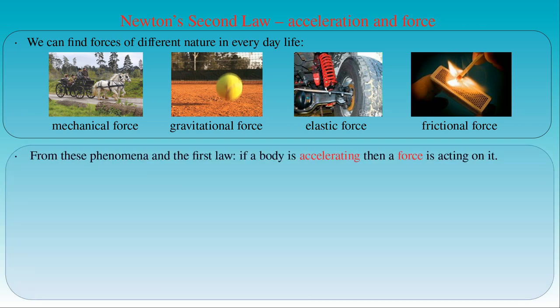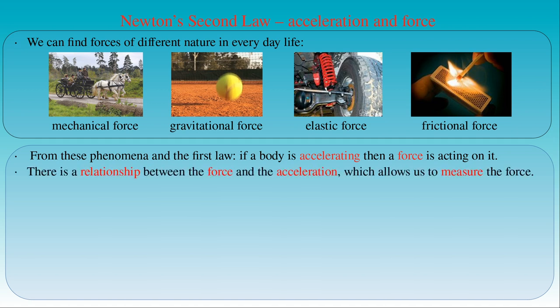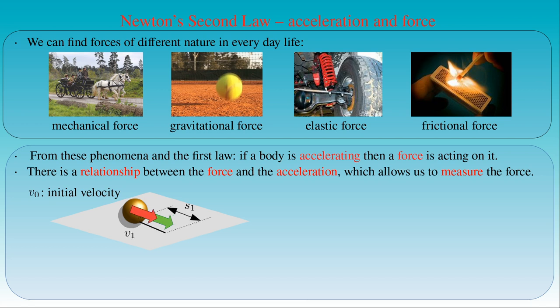Based on the first law, if a body is accelerating then a force is acting on it. Therefore, we must assume there is a relationship between the force acting on a body and its acceleration, which allows us to measure the force. Let us consider a ball made of wood, which is moving at velocity v0 or at rest on a flat surface. If the ball is at rest then v0 is 0. We can push the ball, giving it a greater velocity v1, and measure the distance s1 covered by the moving ball in the time interval t, which equals v1 times t. If the time interval t is short enough, we obtain the average acceleration a1 as the ratio of (v1 − v0) to t.